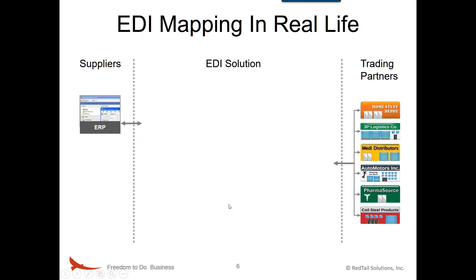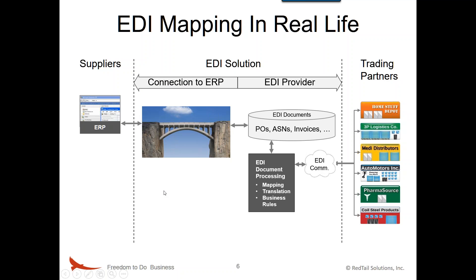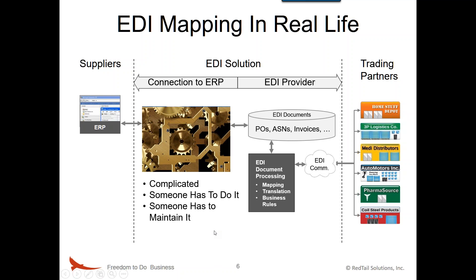Let's look at mapping in real life. It can actually happen in one or more of several places. First, on the trading partner side of the map, the EDI provider has to set up the accommodation of all the fields that the retailer needs, and then they provide a single canonical definition in that direction. But of course there are two sides of a map. Connecting the other side to the ERP system is really what most people are referring to when they talk about EDI mapping. That's where the complexities occur in creating this bridge — it's complicated, has to be done by people, and it has to be maintained.